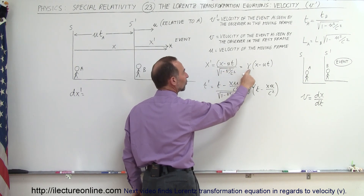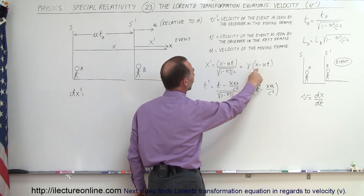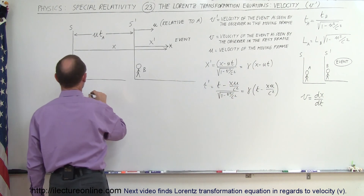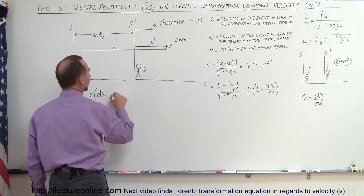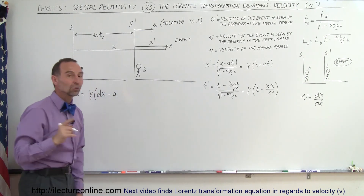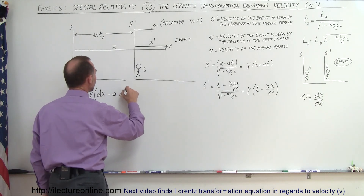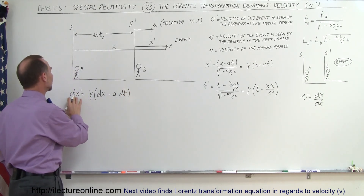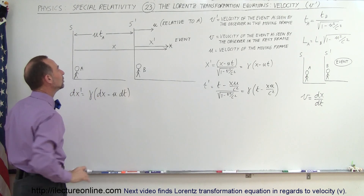Gamma is simply a constant, so it's easier to write it as a constant. The differential of X would be DX, so it'd be the constant gamma times DX. Minus U is just a constant, and taking the differential of T that would be DT. So DX' is equal to gamma times DX minus U DT.